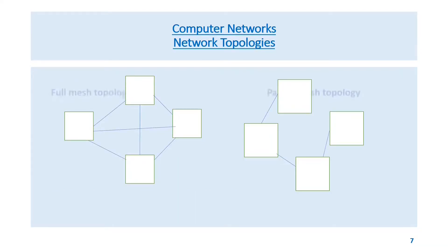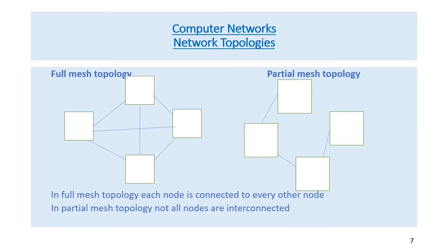Mesh topology has two types: full mesh topology and partial mesh topology. In full mesh topology, each node is connected to every other node. In partial mesh topology, not all nodes are interconnected.